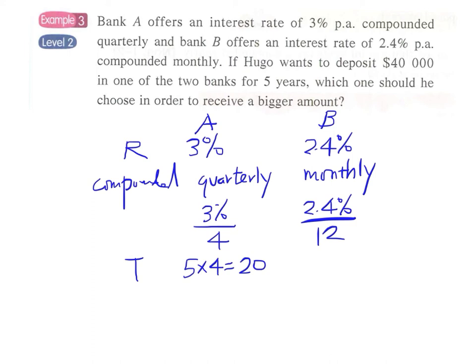For Bank B, the time is five years and since each year has 12 months, there will be 60 intervals for calculating compound interest. Now we have a full analysis of the interest scheme of both banks A and B, and we can proceed to calculate the amounts involved in these two plans.